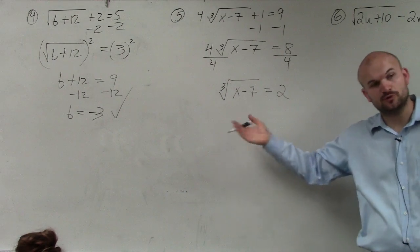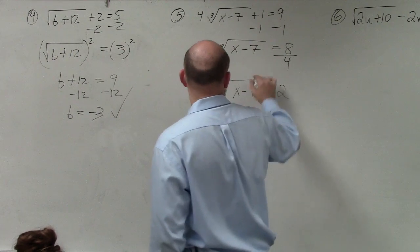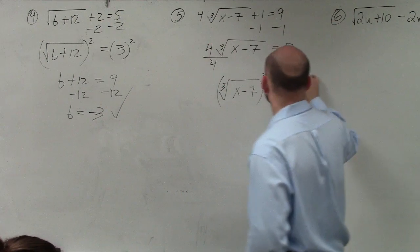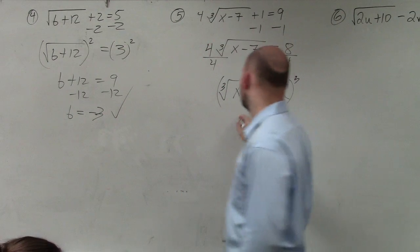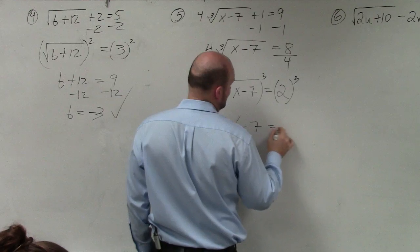Now to undo the cube root, I need to cube. And therefore, I have x minus 7 equals 8.